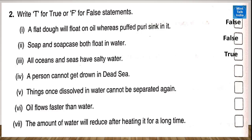Number 4: a person cannot get drowned in the Dead Sea — that is true. Number 5: things once dissolved in water cannot be separated again — that is false. Number 6: oil flows faster than water — that is false. Number 7: the amount of water will reduce after heating it for a long time — that is true.